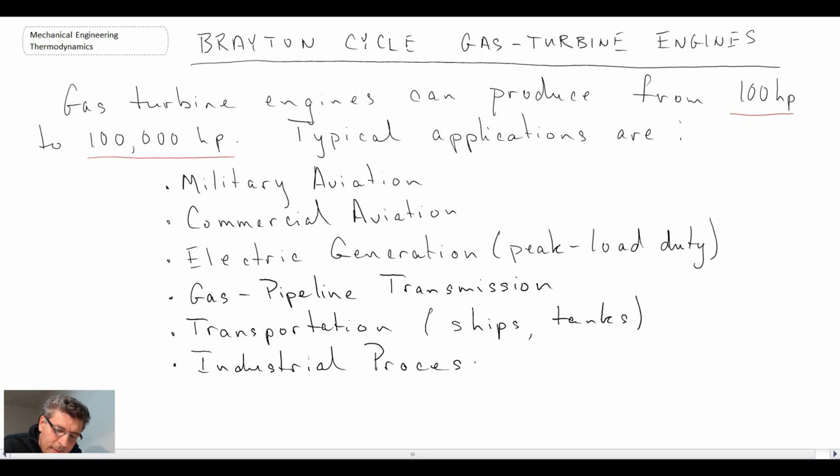The last application is for generic industrial processes. This could be processes where you have the requirement for either work or electrical power. You produce power with the gas turbine engine and you also produce heat. It could be for process heat, it could be for steam generation, a number of different applications. You can see there are many different areas where gas turbine engines are used.